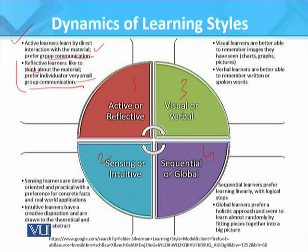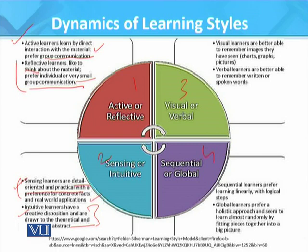The second dimension is sensing versus intuitive learners. Sensing learners are detail-oriented and practical, with preferences for concrete facts and real-world applications. Intuitive learners have a creative disposition and are drawn to the theoretical and abstract. They like to observe, ponder, and deliberate on ideas in a more theoretical and abstract way, whereas sensing learners remain detail-oriented and practical.